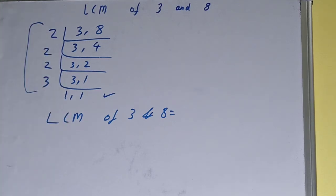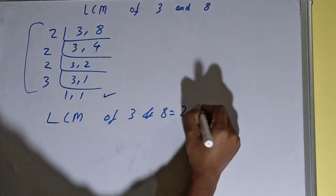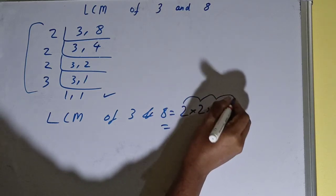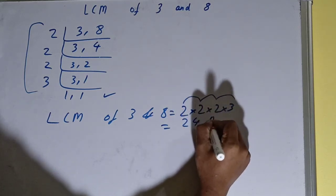Multiply whatever you have on the left-hand side. That is 2 times 2 times 2 times 3. Your answer will be 2 to the 4 is 8, times 3 is 24. Your answer is 24, or your LCM is 24.